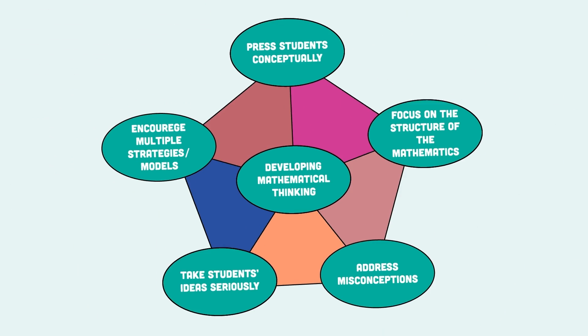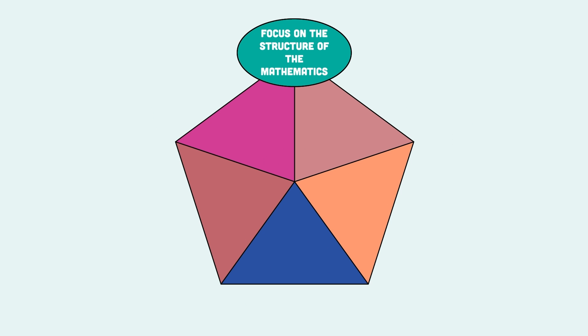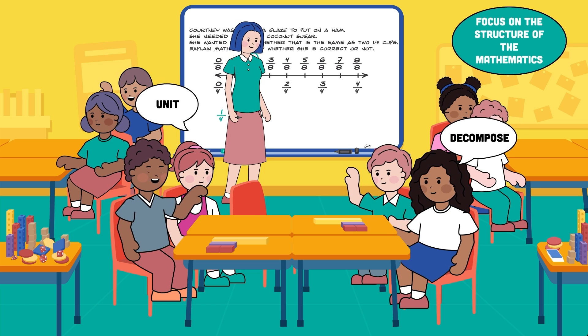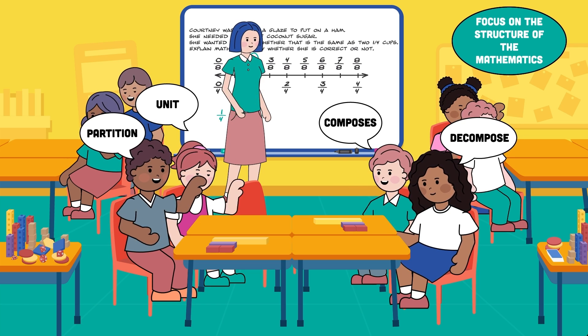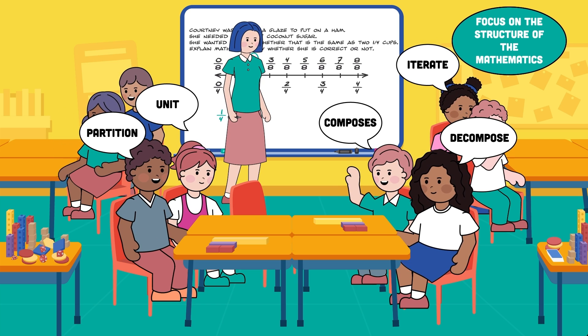The fourth dimension involves shifting the focus to the structure of mathematics, the mathematical elements that are constant across all grade levels. Students use the words unit, decompose, compose, partition, and iterate to help explain how a model works, or how they solved the problem.